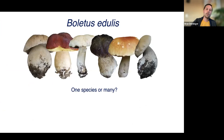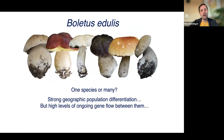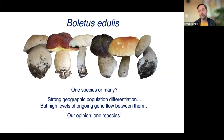Taken together, Boletus edulis has very distinct genetic lineages that are geographically distributed, but there's also ongoing gene flow. Our conclusion is that Boletus edulis is undergoing local adaptation, and that's what's maintaining the genetic distinctiveness in these different geographic regions in the face of gene flow. We were purposely being agnostic about the taxonomy, but given that we see population differentiation but high levels of gene flow, our current opinion is that we're really looking at one species — or at least it's early enough in the speciation process that we don't feel the need to divide it into multiple species.